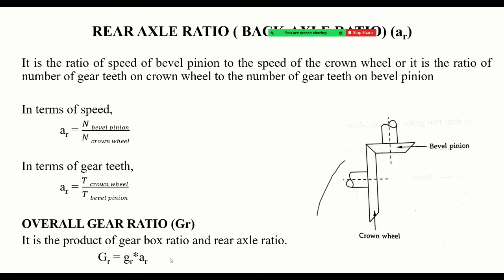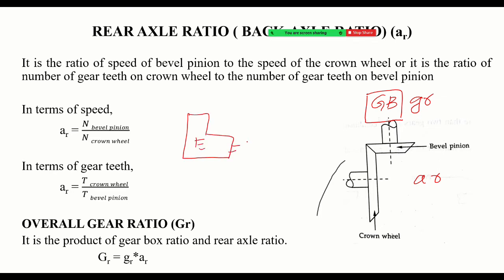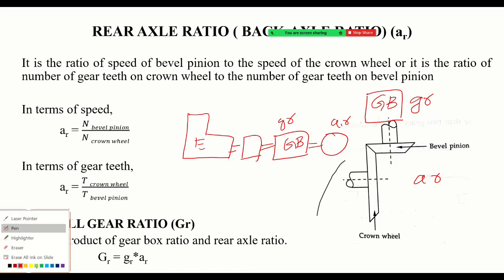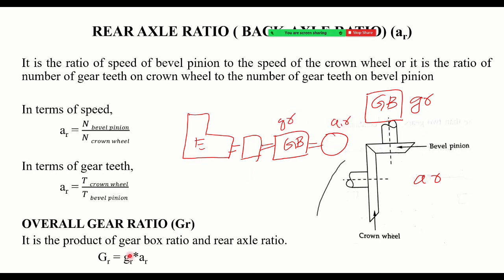In a vehicle, we have a gearbox. The gearbox ratio is combined with the differential ratio to give the overall gear ratio. So: overall gear ratio equals gearbox ratio (GR) multiplied by the differential ratio (ER).